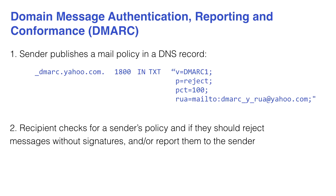Dann gibt es noch DMARC – das Protokoll erfordert, dass jede E-Mail tatsächlich eine Signatur angehängt haben muss, um als valide anerkannt zu werden. Der Empfänger versucht dann aufgrund dieser Signatur zu überprüfen, ob die E-Mail tatsächlich von dem Server kam. Von der Perspektive von Gmail funktioniert das ziemlich gut – über 90 Prozent aller E-Mails wurden authentifiziert mit SPF und DKIM.